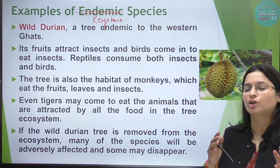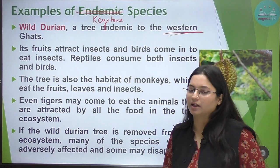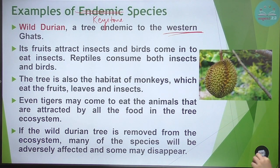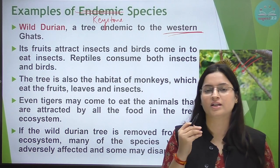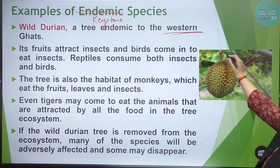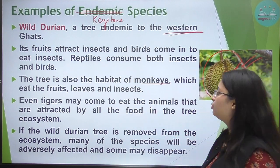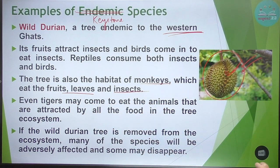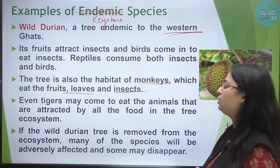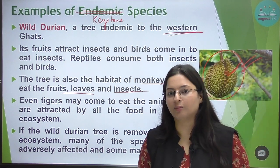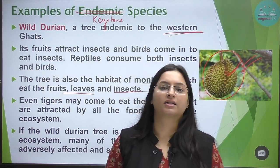An example is the wild durian tree, which is endemic to the Western Ghats region. Its fruits attract insects and birds that come to eat them. Reptiles consume both insects and birds. The tree is also a habitat for monkeys which eat its fruits, leaves and insects. Even tigers may come to eat the animals attracted by the food in this tree ecosystem. If the wild durian tree is removed from the ecosystem, many species in its community would disappear.